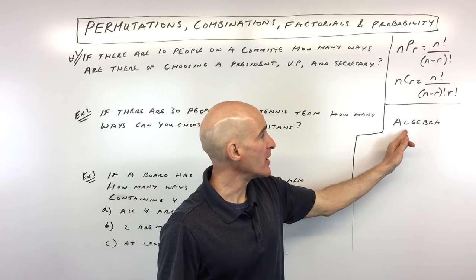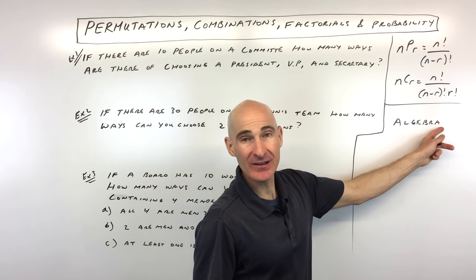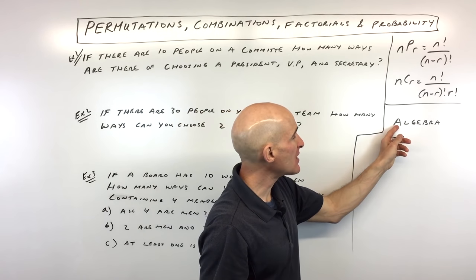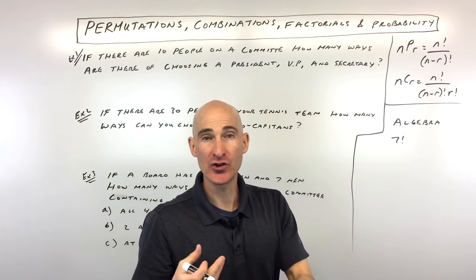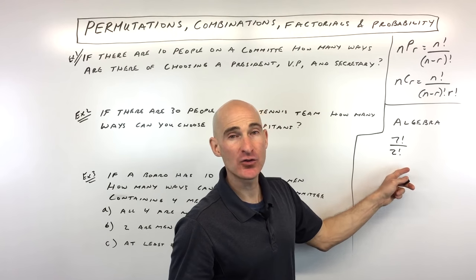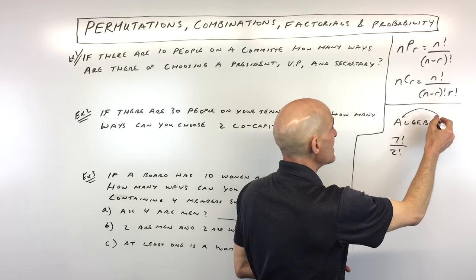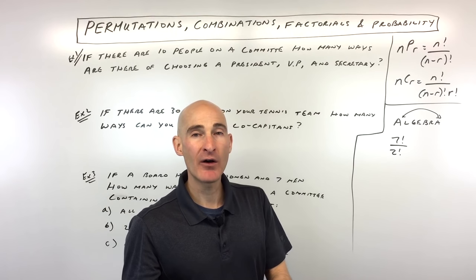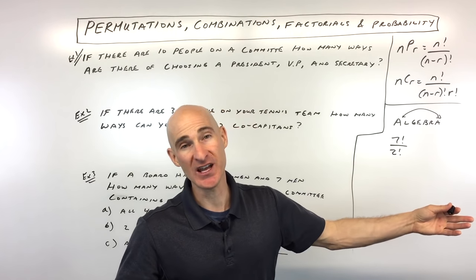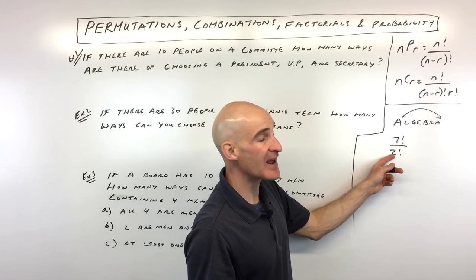If you take a word like ALGEBRA and want the number of permutations of all its letters, there are seven letters, so there are seven factorial ways of rearranging them. But notice there are two A's. When there are repeated letters — repetitions — you divide out those multiplicities. Because there are two A's, we divide by two factorial, which is two. Swapping the two A's would still look like the word algebra, so we don't want to count that as a distinct permutation.